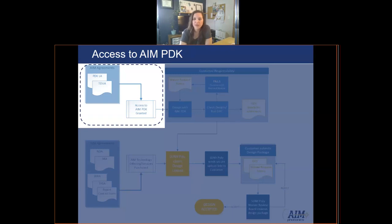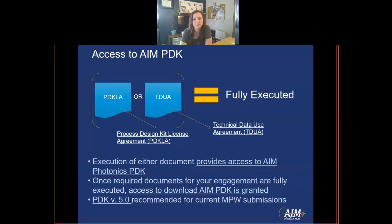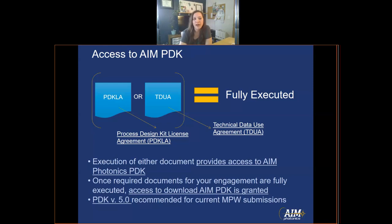Looking back at the process flowchart for a design submission and focusing on access to the AIM PDK, there are two documents that can grant you access. These two documents are the Process Design Kit License Agreement, or PDK-LA, or the Technical Data Use Agreement, or TDUA. Execution of either document can grant you access to the AIM PDK. Once either one of these are fully executed, you are sent a secure download link to download the latest version. We are currently recommending PDK version 5.0 for current MPW submissions.